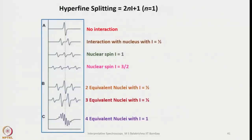To decide the number of lines, very similar to NMR, we use the 2Ni+1 rule, where N is the number of equivalent species (nucleus or other species) and i is the spin value. Considering N equals 1, in the absence of any interaction a radical or anion would show only one line. When it interacts with one nucleus with spin i equals half, we see two lines.